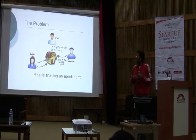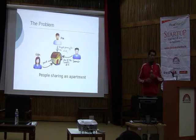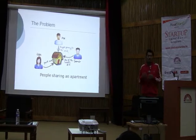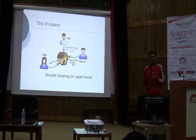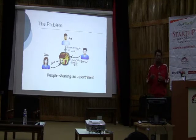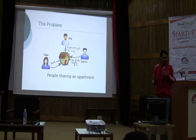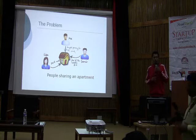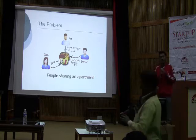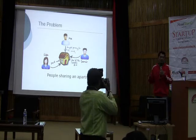Let's take this particular scenario where we have three roommates who are sharing an apartment. Every month there are different kinds of bills and expenses that are split between each other — like house rent, groceries, and maintenance bills.